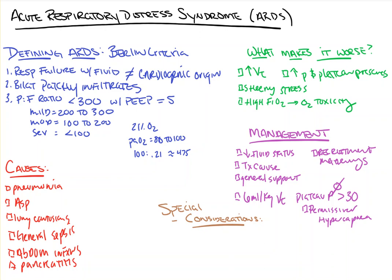The last part is adjunct therapies as special considerations — they may help, they might not. Neuromuscular blockade can be used to help make the patient more synchronous with the vent, meaning they won't buck or fight against it, allowing their lungs to rest and just be ventilated. We do need to be careful, though, because ICU patients already have an increased risk of ICU neuropathy, and paralyzing them can make that worse.